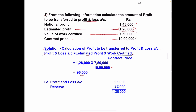So, 96,000 is transferred to profit and loss account and the remaining goes to reserve. The estimated profit is 1,28,000. From this, we have transferred 96,000 to profit and loss account. So, 1,28,000 minus 96,000 gives 32,000. This 32,000 is transferred to reserve. Reserve: 32,000. Total of these two: 1,28,000.